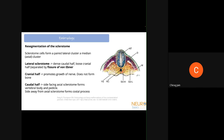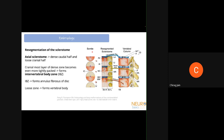In the lateral sclerotome, the cranial half does not form any bone — it just promotes growth of the nerve exiting that neural foramen. The caudal half forms two structures: the side facing the axial sclerotome forms the more medial structures of the vertebral body and pedicle, while the side facing away forms the costal process. The somites then resegment: the loose cranial half of one somite joins with the dense caudal half of the somite above to form a resegmented sclerotome.